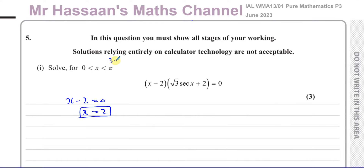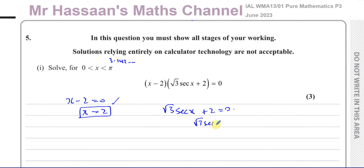x = 2 is one of our solutions because two is within the range — remember pi is approximately 3.142, so x = 2 is within range. Or we can say √3 sec x + 2 = 0, in which case √3 sec x = −2.